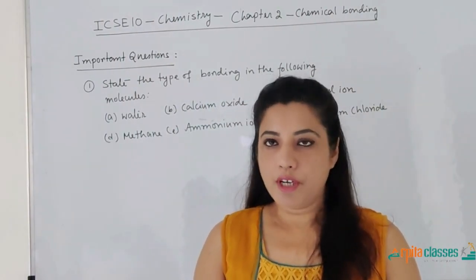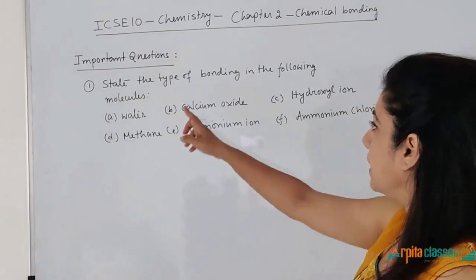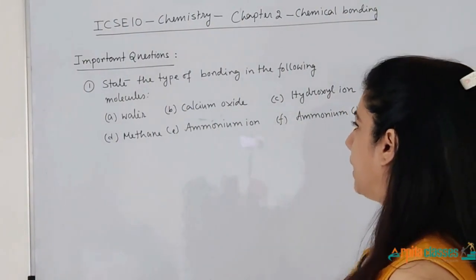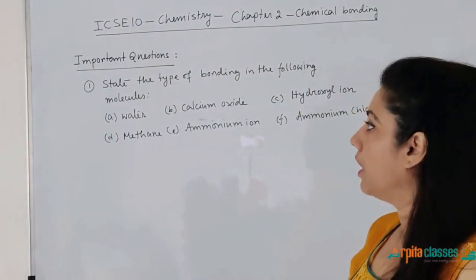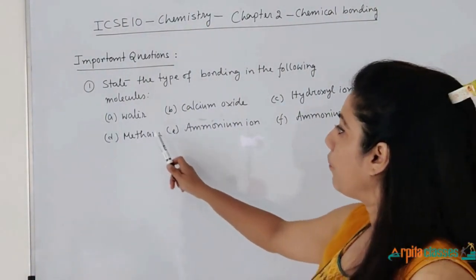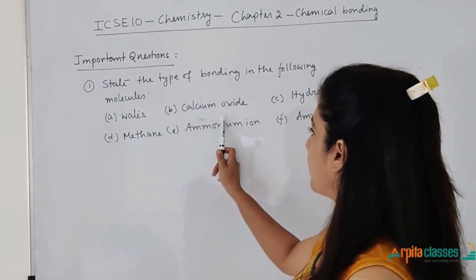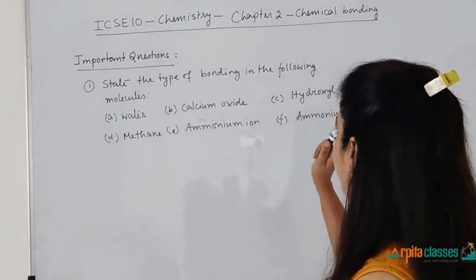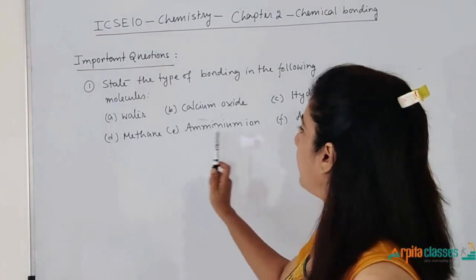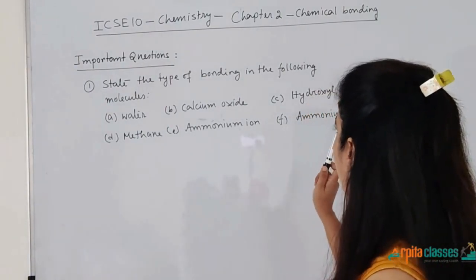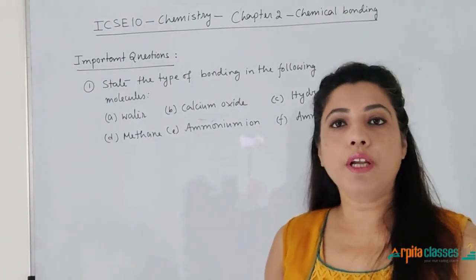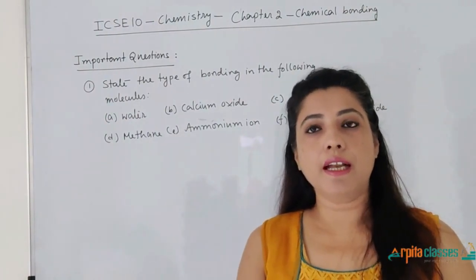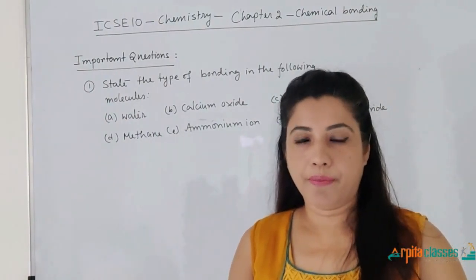The first question is: state the type of bonding in the following molecules. You have been given water, calcium oxide, hydroxyl ion, methane, ammonium ion and ammonium fluoride. So we need to just state the type of bonding.